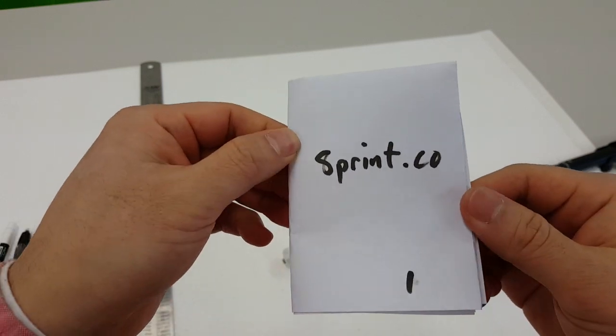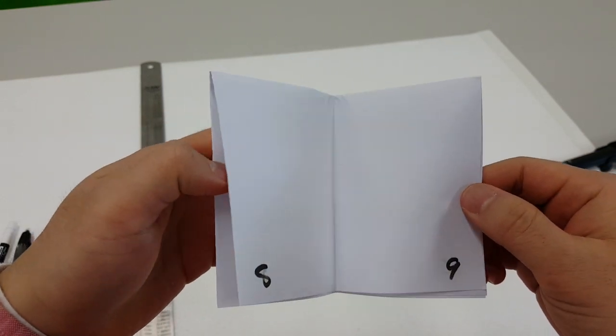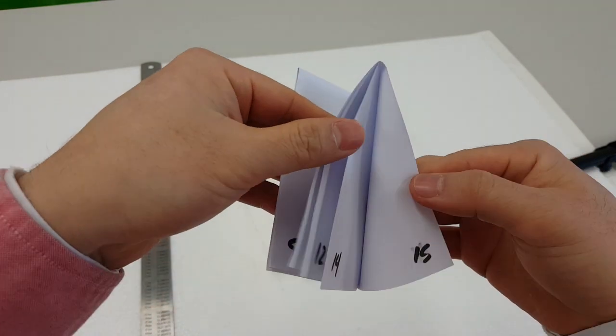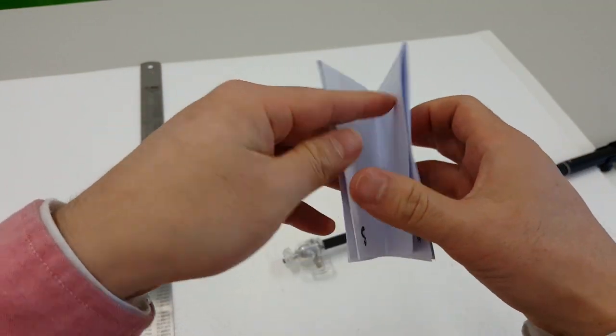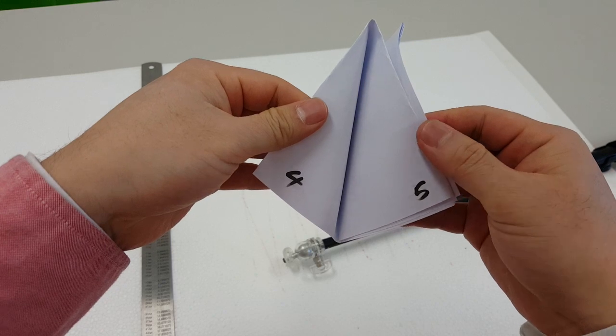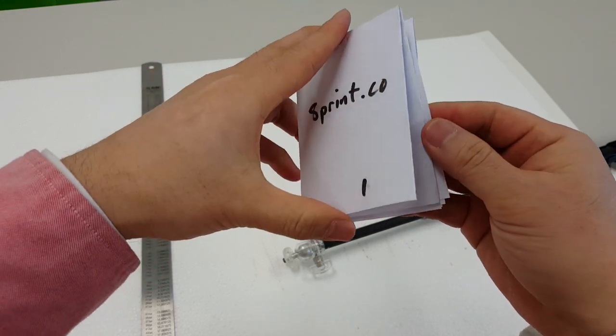Okay, so imagine that this is a 16-page brochure. Obviously it's tiny, but it's got all 16 pages: 14, 15, 16. But notice it has page 1 and page 4 and page 5. What happened to page 2 and 3?